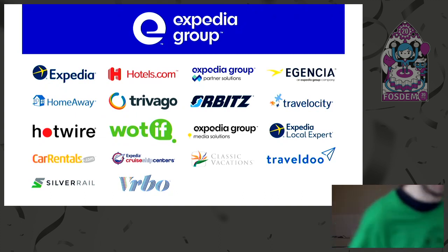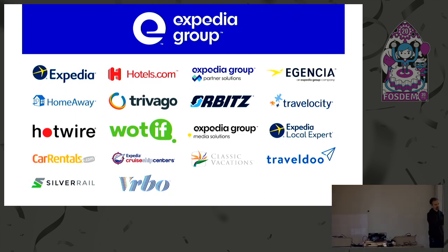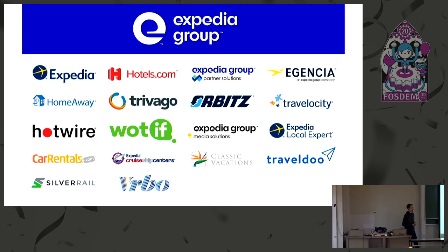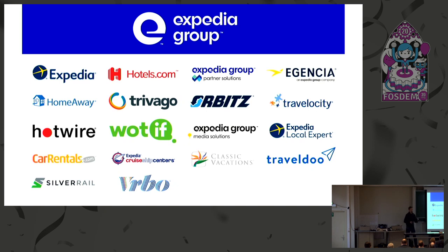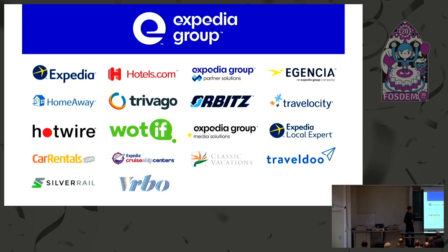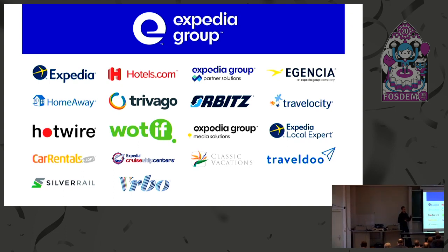Before everyone runs out of the room screaming in terror, I promise you this isn't a marketing slide. This is actually important for how we've had to structure our data lake. Expedia Group consists of a number of different companies that we've either developed, bought, or acquired over the past 20 years or so. We have online travel agencies, flights, hotel bookings, vacation rentals, car rentals — all kinds of different companies. These all operate at a different scale, have different requirements, and all generate a lot of data.